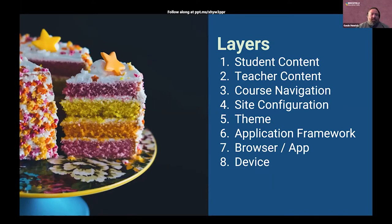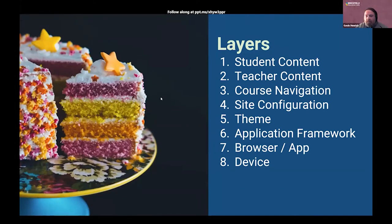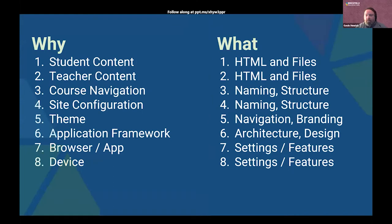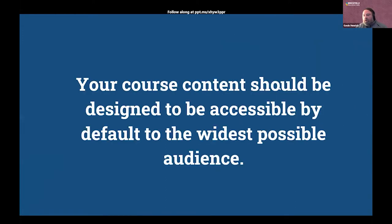Then you have site configuration, navigation, course structure and content, and even student-generated content. Ensuring that when a student adds an image in a forum, they also add a description — that's really important too. So you've got all these different layers and you need a plan for how you're going to address each of them, even if it's not necessarily your responsibility. The content areas include naming, structure, HTML, files, settings, and features. Ideally, you want your course to be designed accessible by default to the widest possible audience — actively not adding barriers.